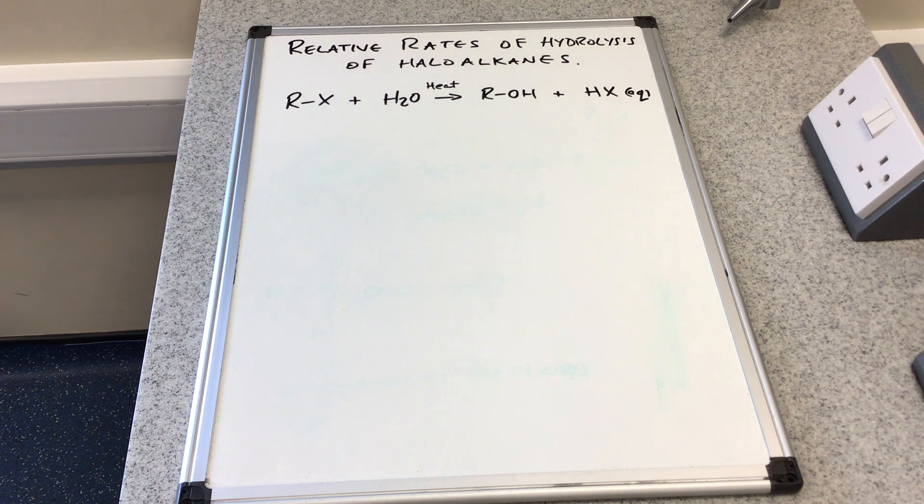Just a reminder of the hydrolysis reaction: we take a haloalkane, R-X, and we react it with water, heat it up, and we get an alcohol form, R-OH, and we make the hydrogen halide which will be H+ aqueous and X- aqueous, an aqueous halide ion.